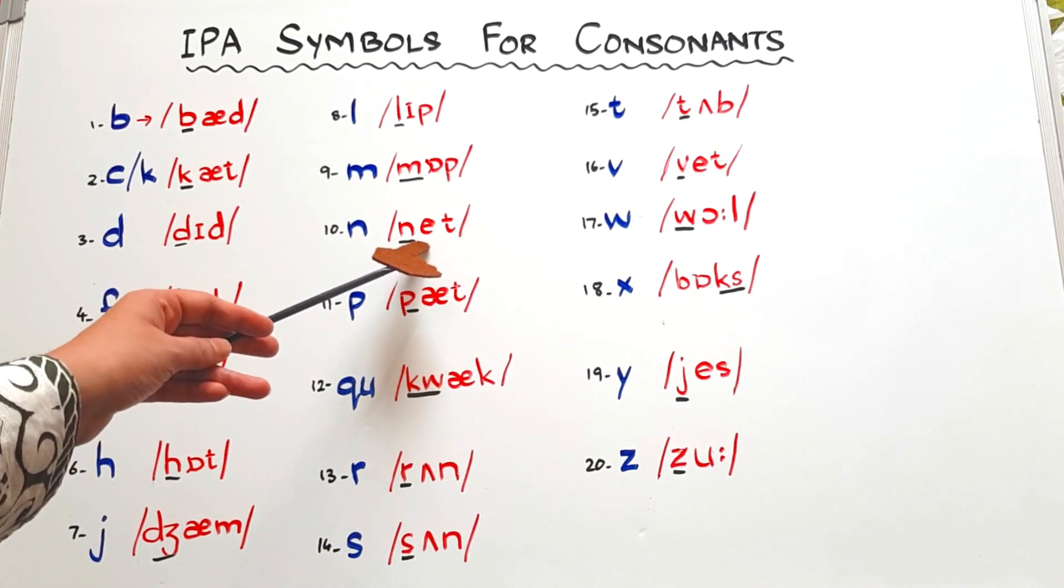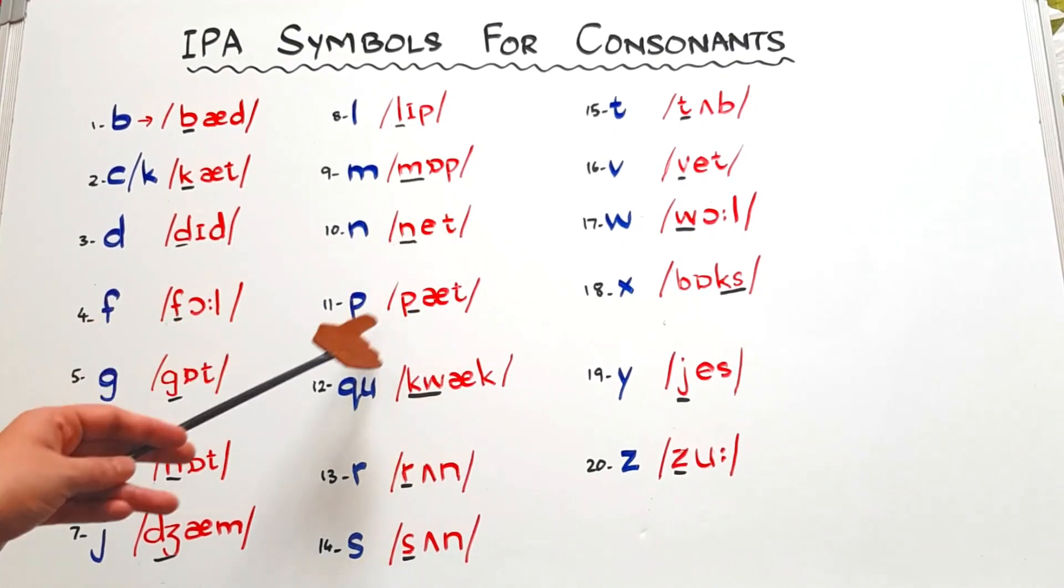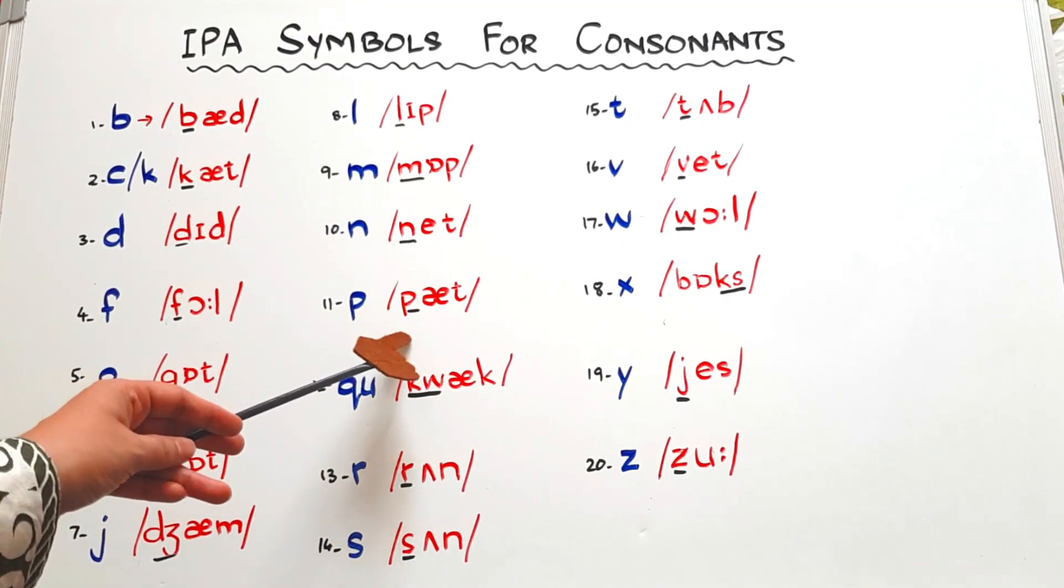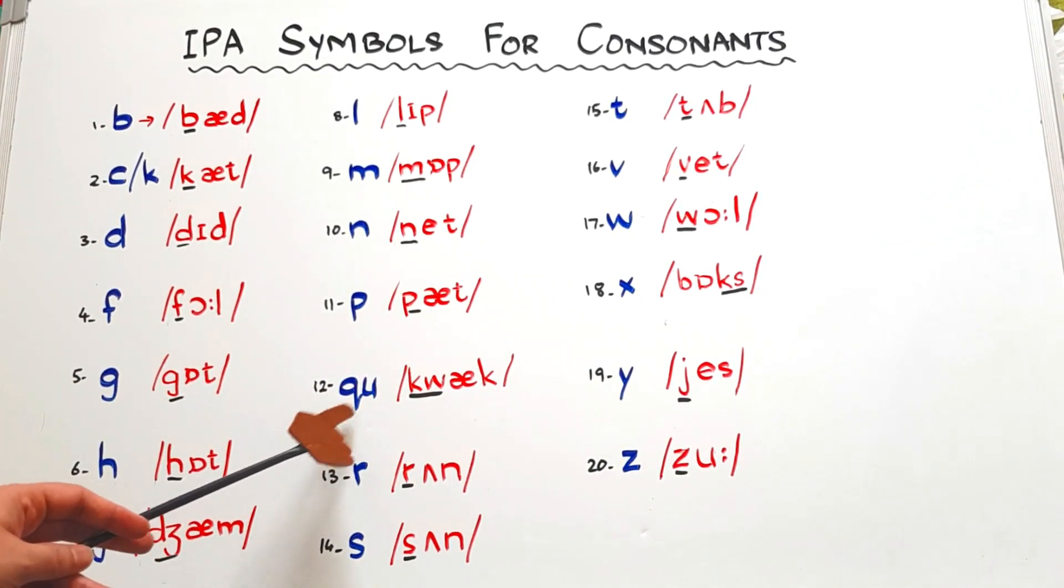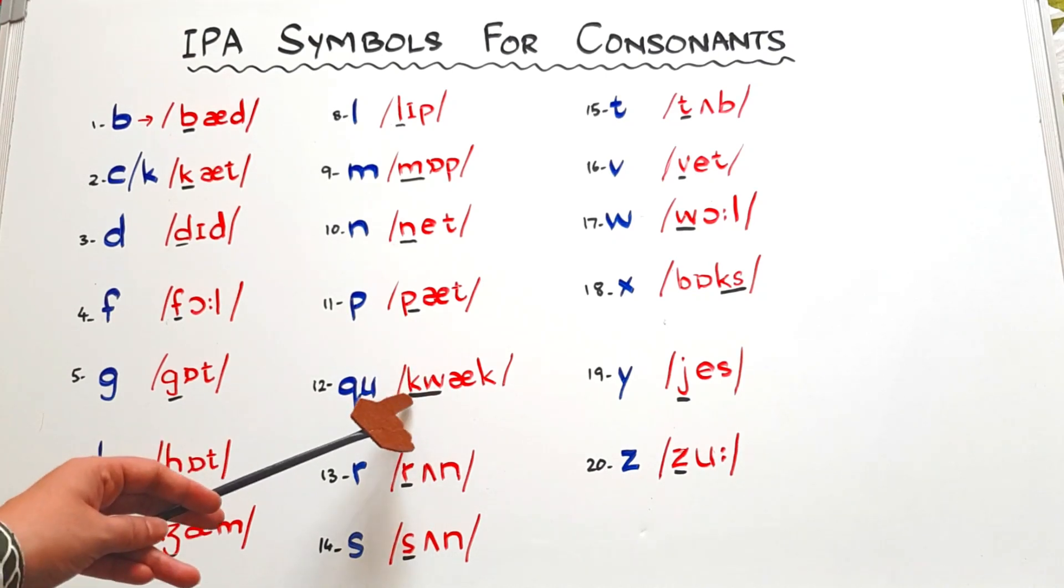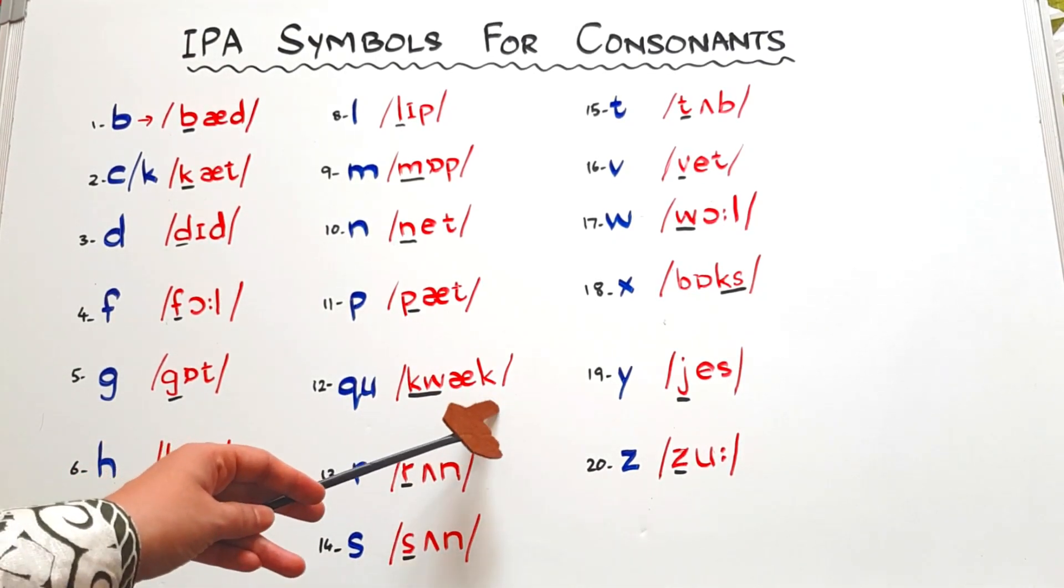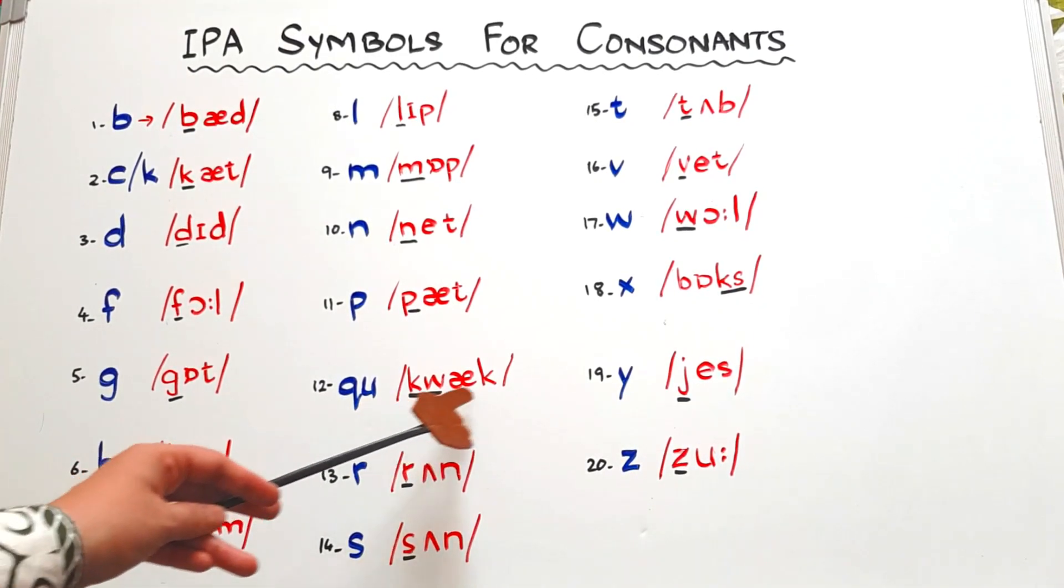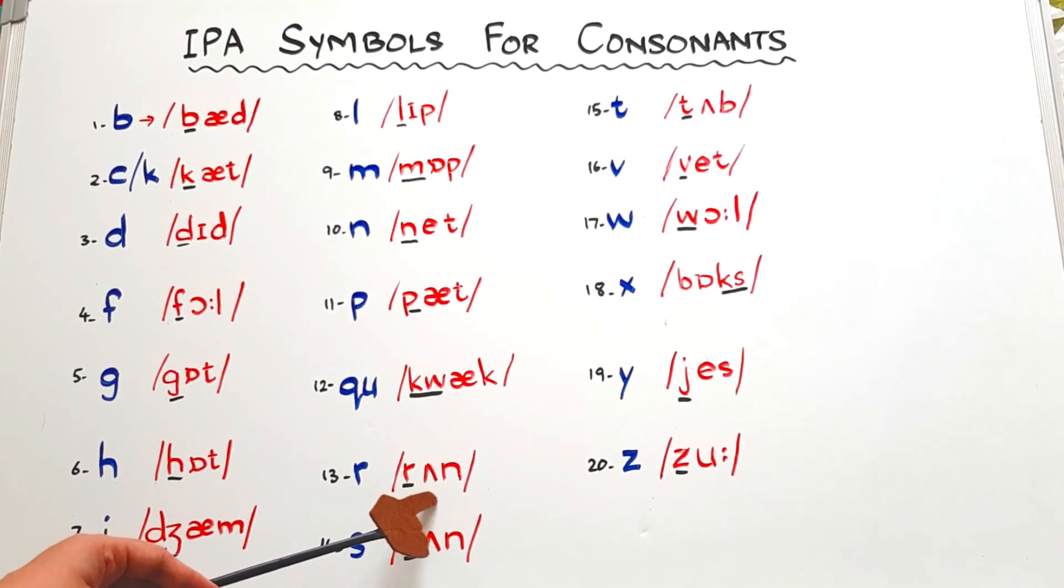Then P - for P it is the same like this. P-A-T, 'pat'. QU - because they are two letters together, so we have the phonetic symbol like this: K and W together, it's KWA. Q-U-A-C-K, 'quack', the sound of the duck. Then we have R, same R. R-U-N, this is the short U sound, 'run'. For S, this is S-U-N, 'sun'.